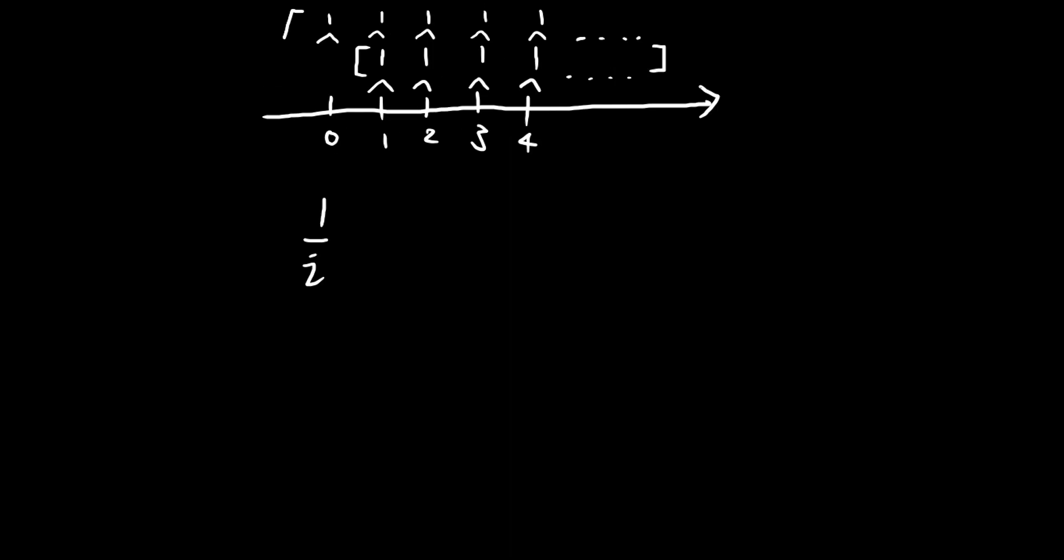And for the annuity due, all these payments are equal to 1 over d. If I subtract 1 over i from 1 over d, we're essentially just canceling all these payments out. All these payments cancel each other out except for the initial payment in the annuity due. All we're left with once we do the subtraction is the initial payment at time 0, so this is actually equal to 1.